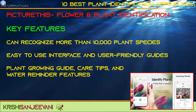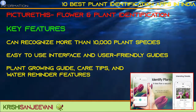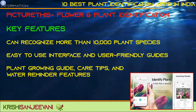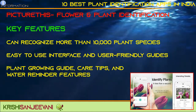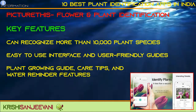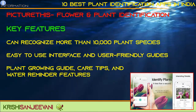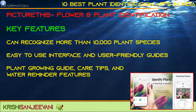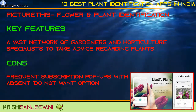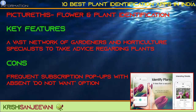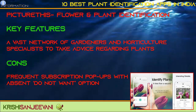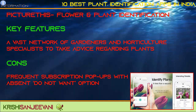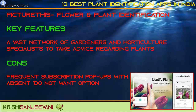Picture This — flower and plant identification. Key features: can recognize more than 10,000 plant species with 98% accuracy using AI; easy-to-use interface and user-friendly design; plant growing guide, care tips, and water reminder features; a vast network of gardeners and horticulture specialists to take advice regarding plants. Cons: Frequent subscription pop-ups with no 'do not want' option.